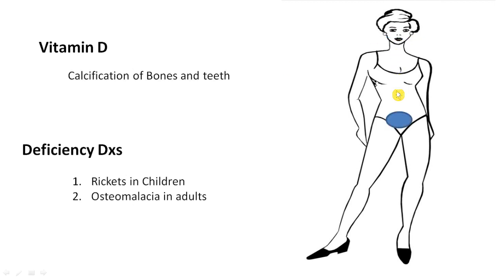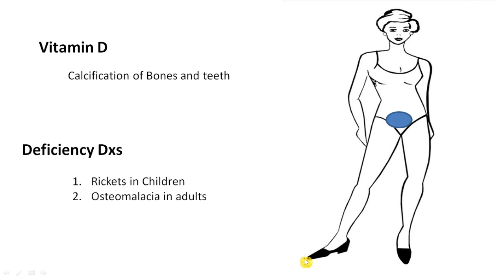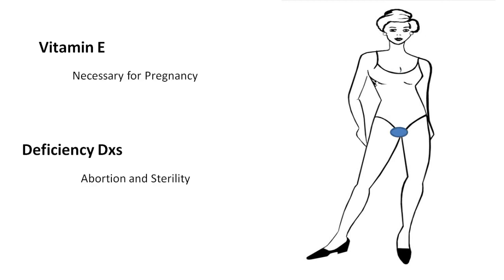Moving to Vitamin D: the letter D starts with 'D' and ends with a 'K' sound — it helps in calcification of bones and teeth. Its deficiency causes rickets in children — where lack of calcium causes bones to bend — and osteomalacia in adults. These are key bony disorders to remember.